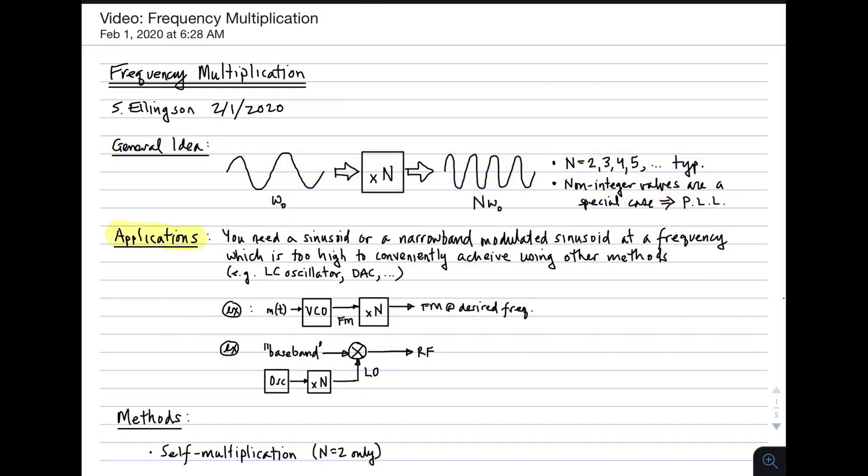Applications for frequency multiplication occur when you need this sinusoid, or a narrowband modulated sinusoid, at a frequency which is too high to conveniently achieve using another method. For example, an LC oscillator, or a DAC, or something of that nature. Other methods of frequency synthesis. So the idea is that you generate the signal at a low frequency, and then you multiply in frequency to get to the desired frequency.